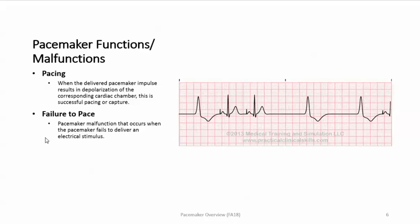The first malfunction is failure to pace — this occurs when the pacemaker fails to deliver an electrical impulse. When this happens, the underlying rhythm for which the pacemaker was implanted returns. For example, with an atrial pacer you'd see normal sinus activity; the next pacing should have occurred but didn't, causing a pause followed by a ventricular escape beat.